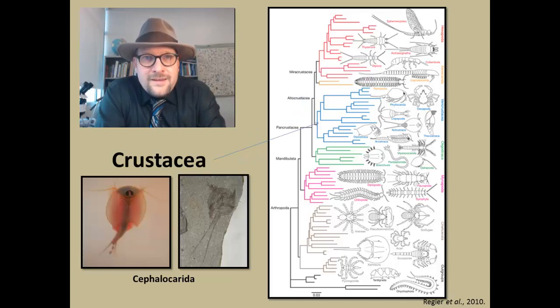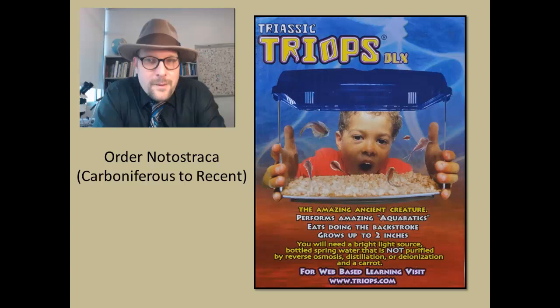There is also the Cephalocarida—these are the horseshoe shrimp, but you probably know these as Triops. These are the famous group of little shrimps that people take home as pets from hobby stores. They take their eggs, hydrate them, and they hatch, and you get these little Triops. These are an interesting group because they have a very extensive fossil record going all the way back to the Carboniferous, so they are an example of a living fossil.